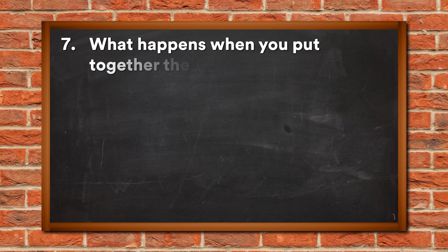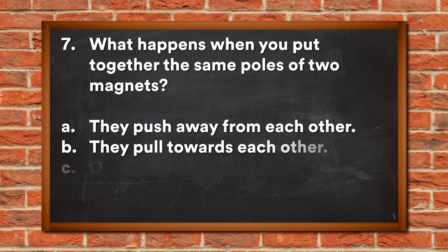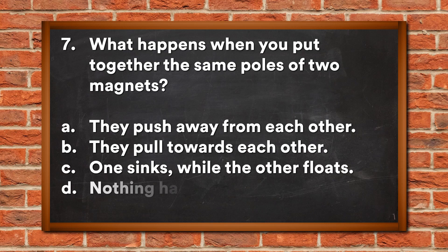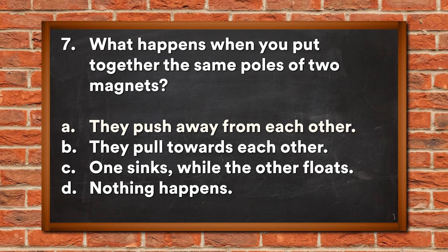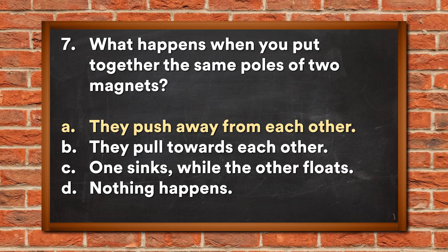Question 7: What happens when you put together the same poles of two magnets? A. They push away from each other, B. They pull towards each other, C. One sinks while the other floats, D. Nothing happens. The answer is A, they push away from each other.